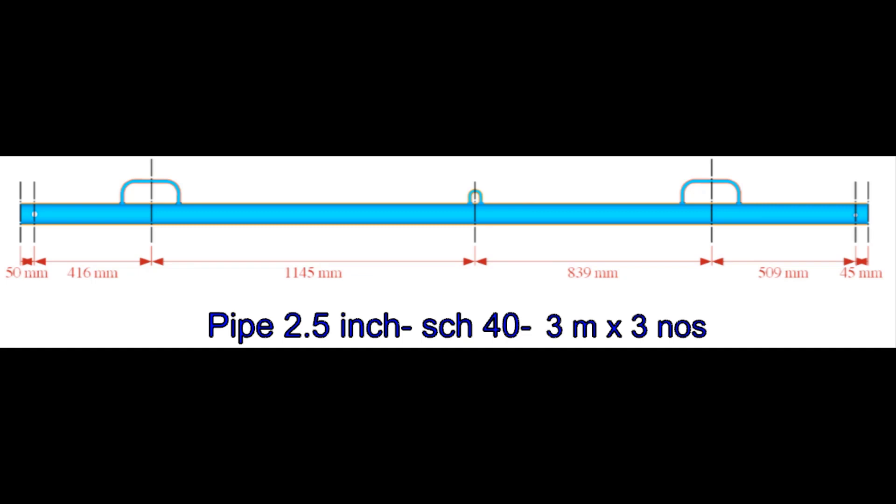The diameter of the holes in the pipe is 24mm. Drill the holes on the pipe. Fit up and weld the handles and the hook on the pipe.